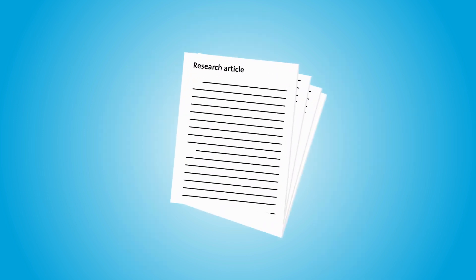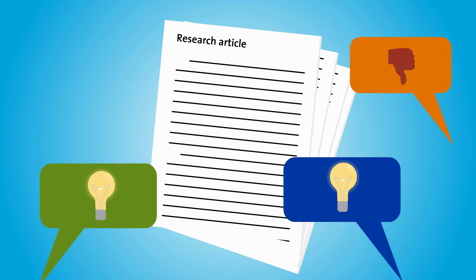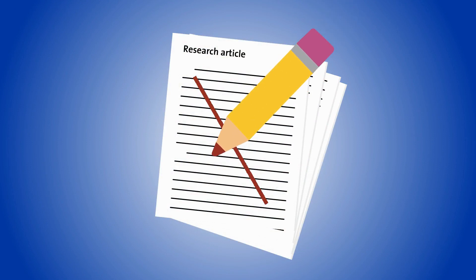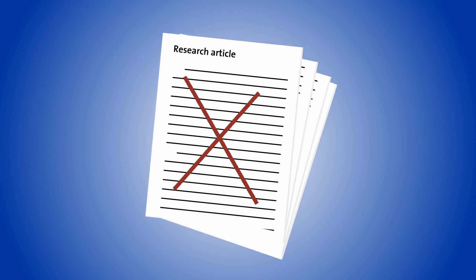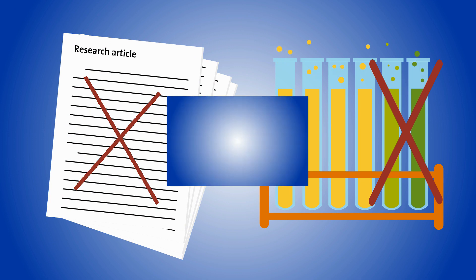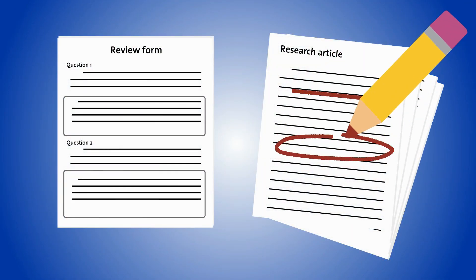Another way to keep your review bias-free is to be specific in offering advice or criticism. Simply saying that a manuscript is poorly written or that some experiments lacked controls makes it difficult for any author to find ways to improve their work. Instead, cite specific examples of where you've found room for improvement.